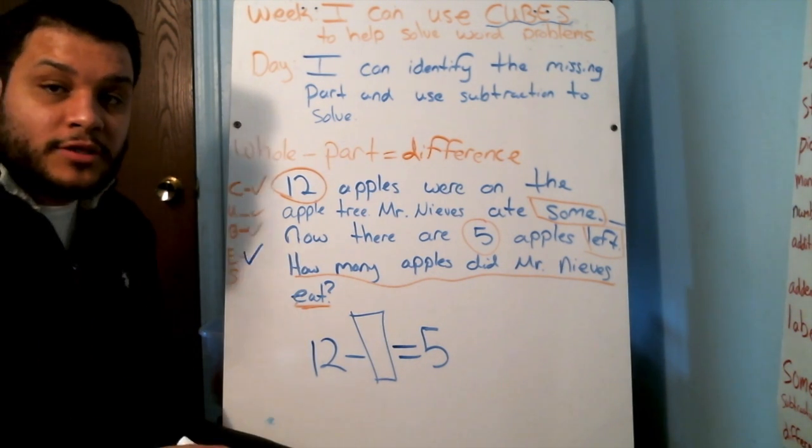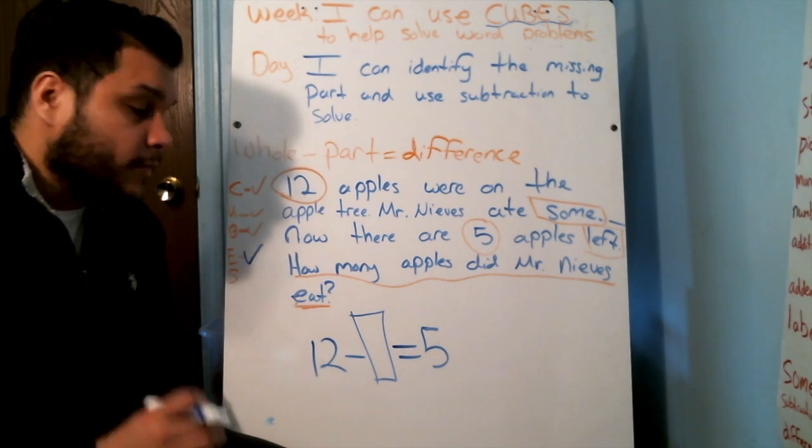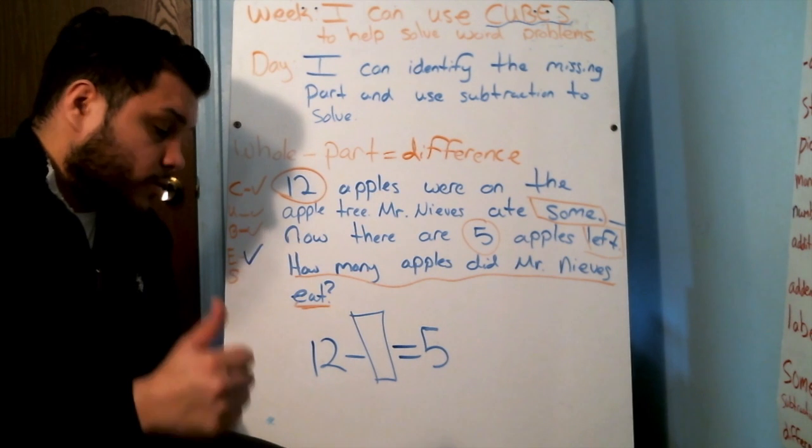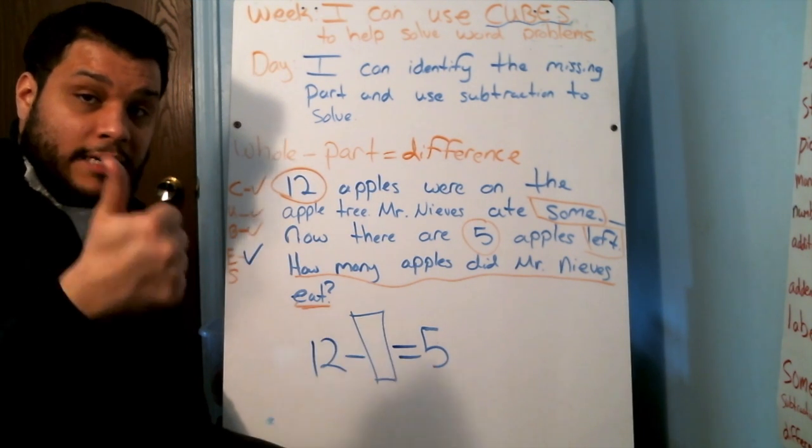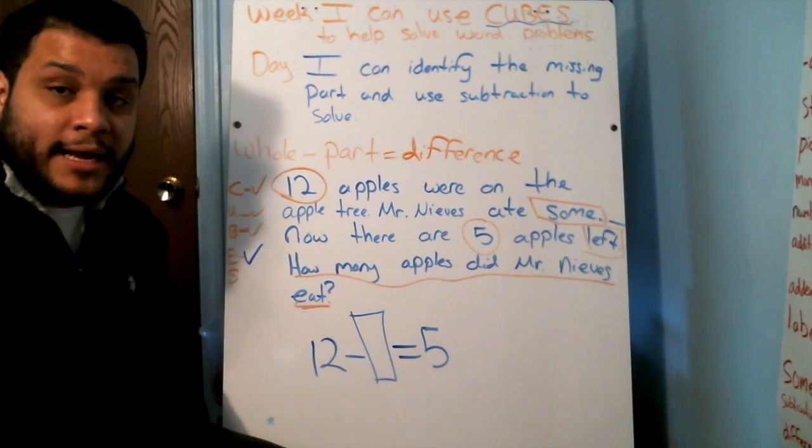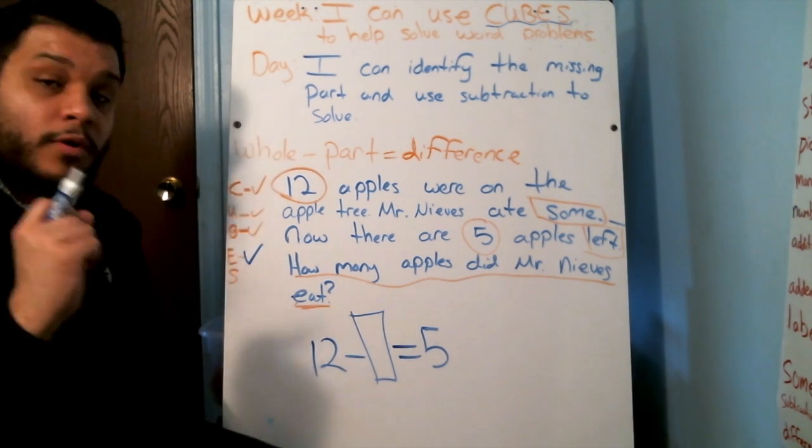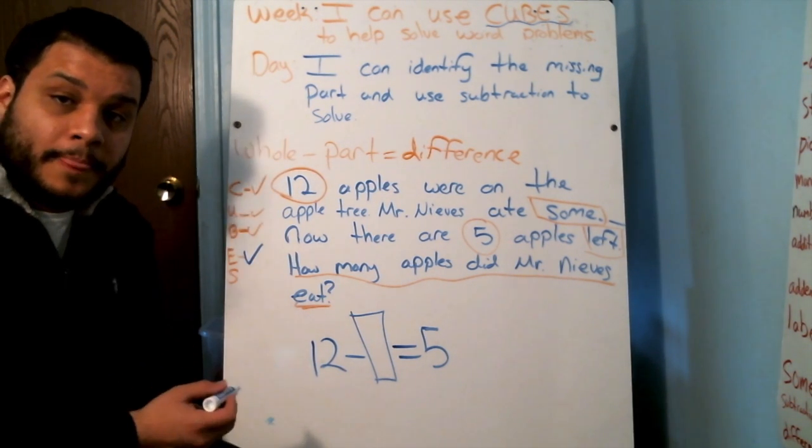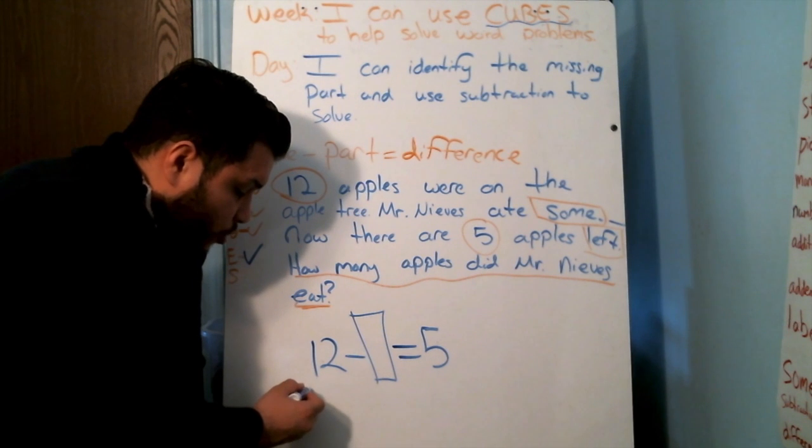Yesterday, we did two strategies that I showed you. We did the eliminating strategy, which is us crossing one out at a time. And we did the number line. I'm going to do the eliminating one again. How many am I going to start off with? I will start off with 12. So count with me.